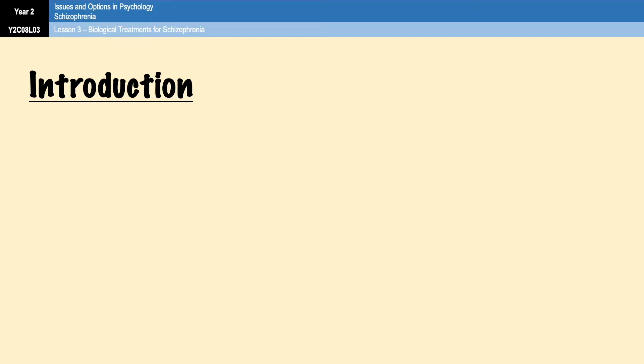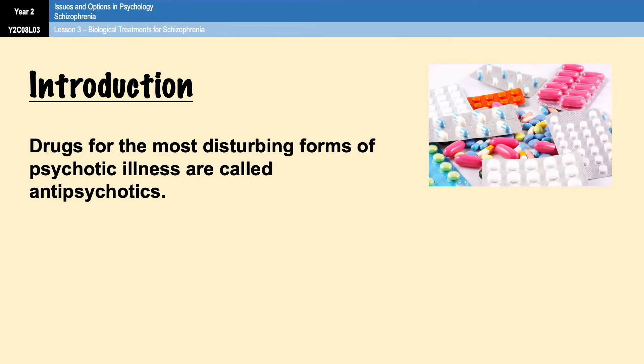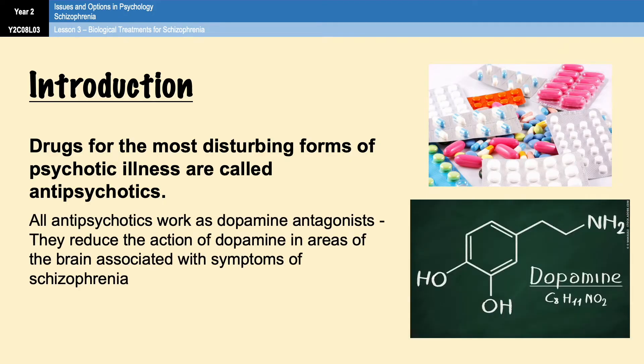Drugs for the most disturbing forms of psychotic illness are called antipsychotics. All antipsychotics are what's known as dopamine antagonists. Antagonists are chemicals that reduce the action of a neurotransmitter. Antipsychotics reduce the action of dopamine in areas of the brain that are associated with symptoms of schizophrenia. There are two main types you need to know about for the A-level syllabus: typical or conventional antipsychotics and atypical antipsychotics.